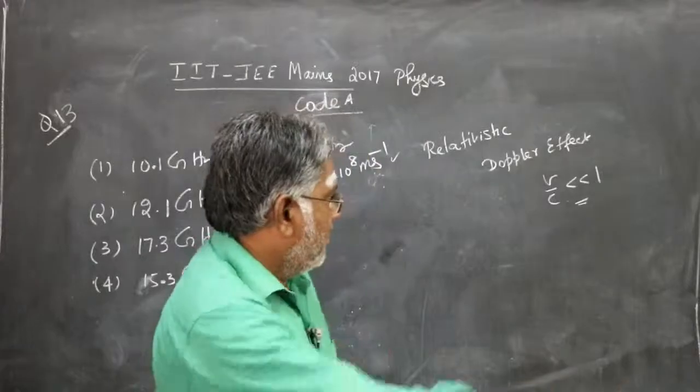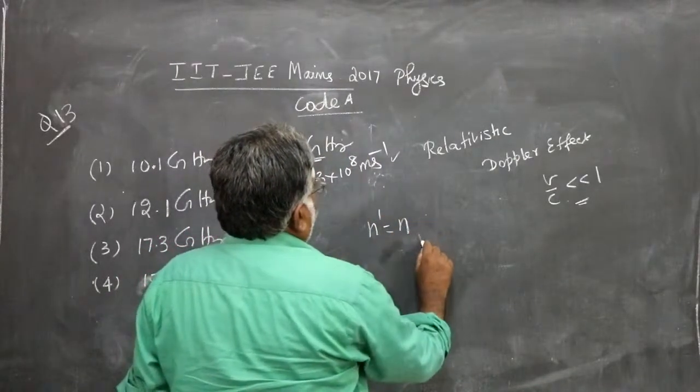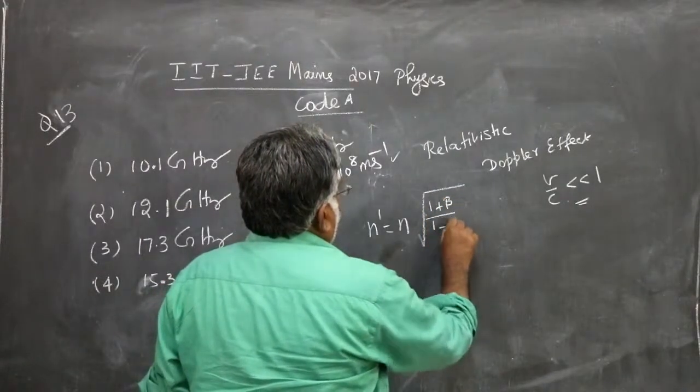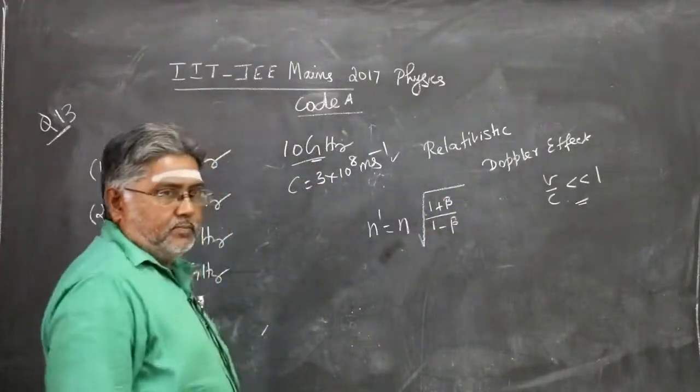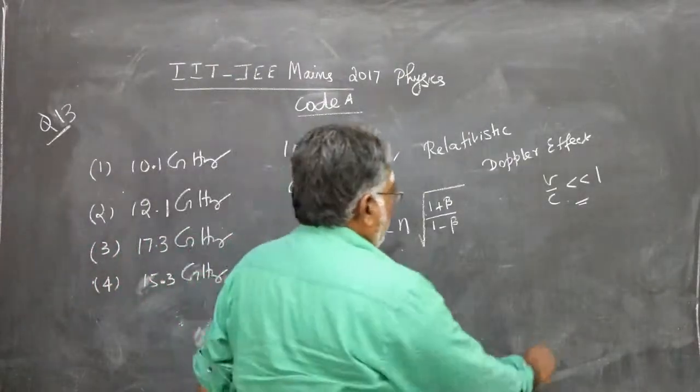n' = n × √[(1 + β)/(1 - β)]. Just assume the formula. Here beta (β) is V by C.